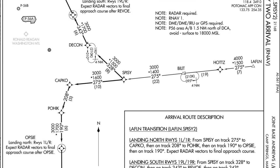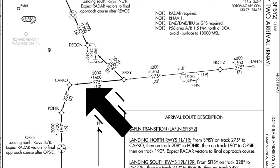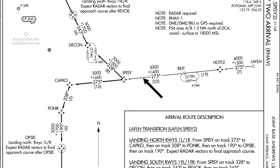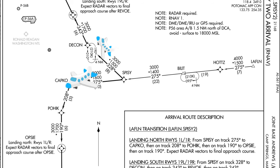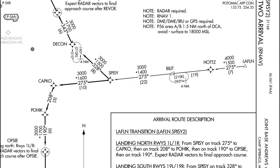Now let's look at the line weights on the chart. Some lines are bold and some are thin. The bold lines are the routes you will take depending on which runway you're landing at. The thinner lines are alternate routes on this arrival — for example, you may not come in at Laughlin but instead enter at the Sipsy transition.